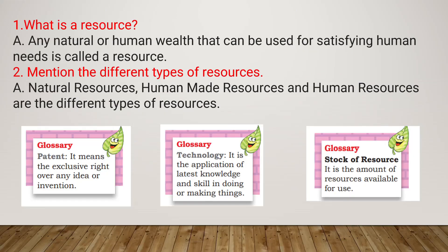What is a resource? Any natural or human wealth that can be used for satisfying human needs is called a resource. Mention the different types of resources. The different types of resources are: natural resources, human-made resources, and human resources — three types in total.